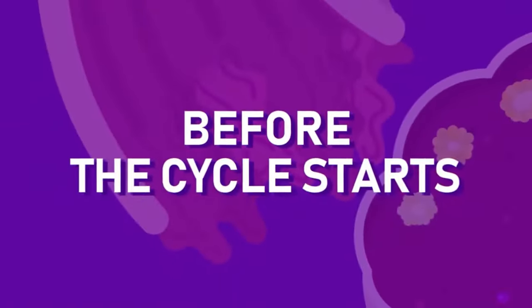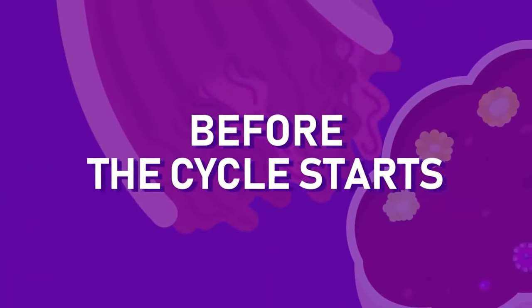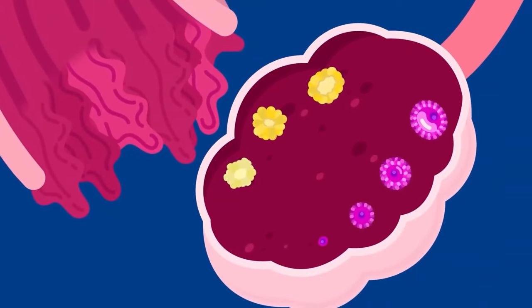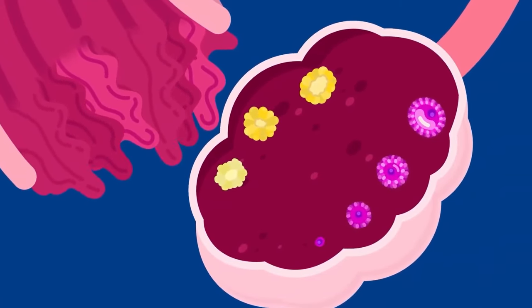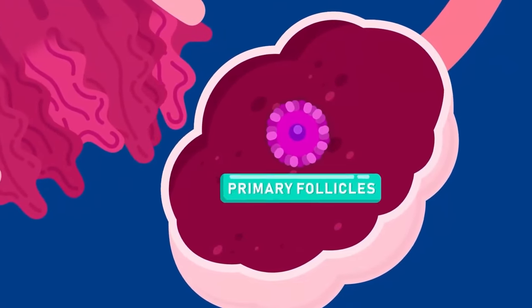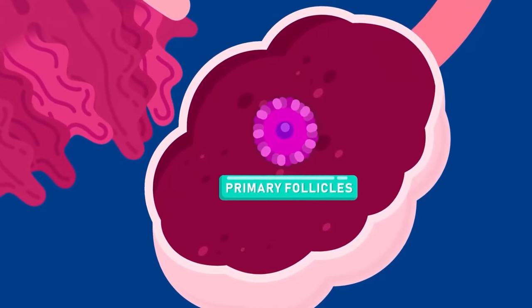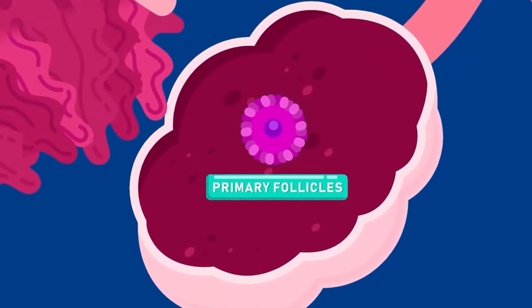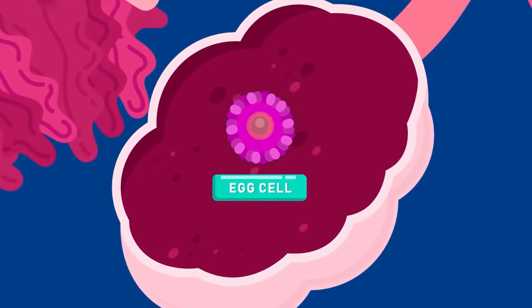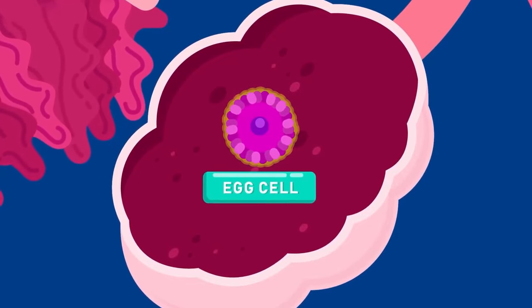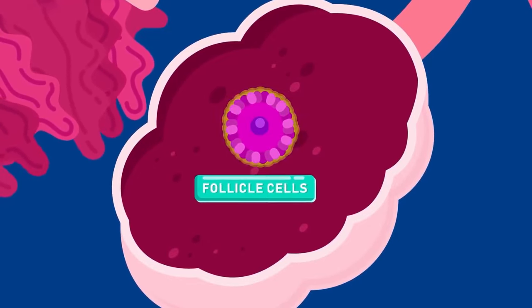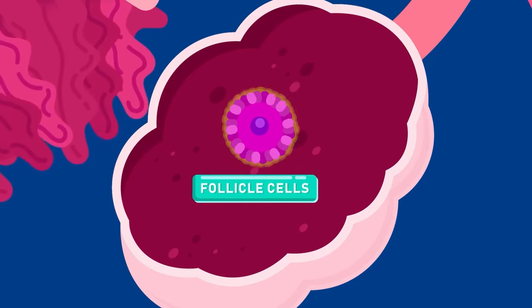Before the cycle starts, inside the ovary there are many developing follicles. The young follicles are called primary follicles. Each primary follicle consists of a potential egg cell surrounded by a layer of smaller cells, known as follicle cells.